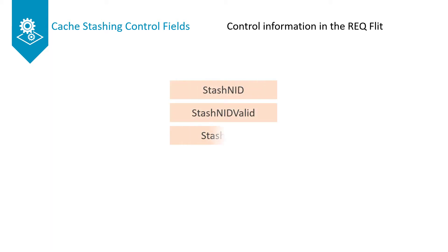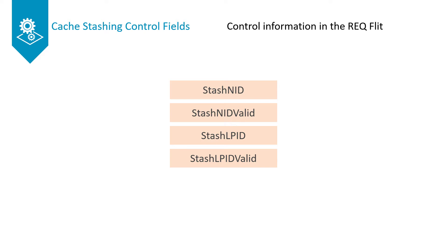The request flit uses the following fields for cache stashing. Stash NID indicates the node ID of the stashed target. If an RNF is chosen as the target for a stash, the Stash NID field is populated with the node ID of the RNF. The Stash NID Valid field signals whether the value of the Stash NID field should be considered when doing the stash.